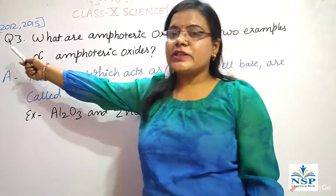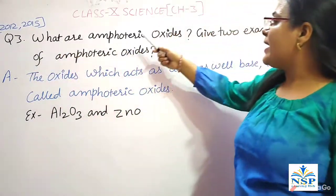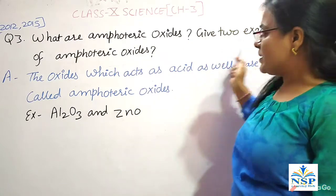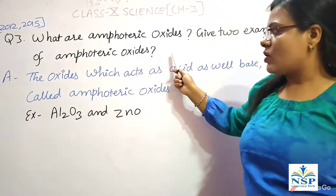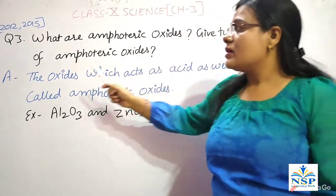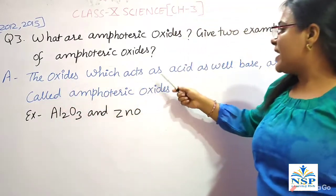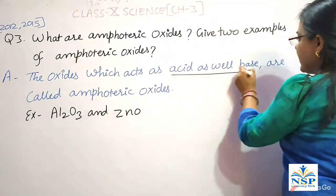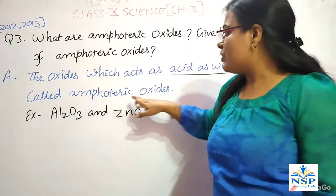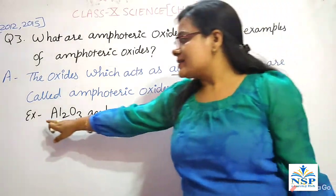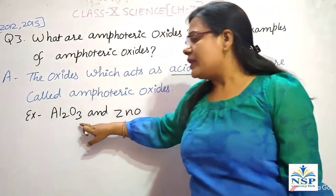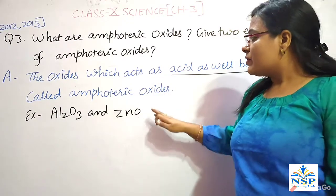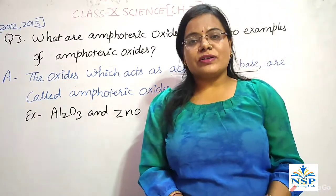Our next important question is question number 3: what are amphoteric oxides? Give two examples. The oxides which act as acid as well as base are called amphoteric oxides. For example, aluminium oxide and zinc oxide behave like amphoteric oxides.